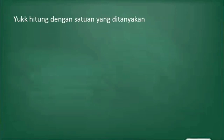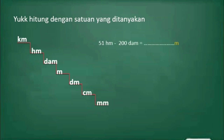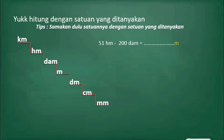Sekarang kita akan menghitung dengan satuan yang ditanyakan. Tangganya masih sama. Contoh yang pertama: ada 51 hektometer dikurangi 200 dekameter, sama dengan berapa meter? Tipsnya: samakan dulu satuannya dengan satuan yang ditanyakan. Berarti semuanya harus diubah ke dalam bentuk meter.